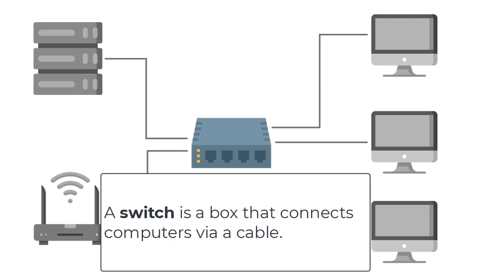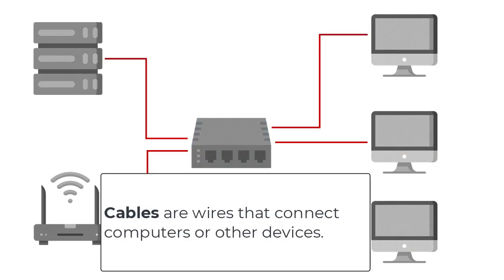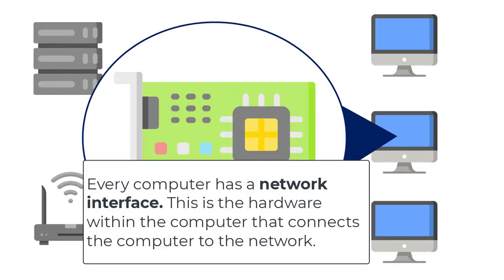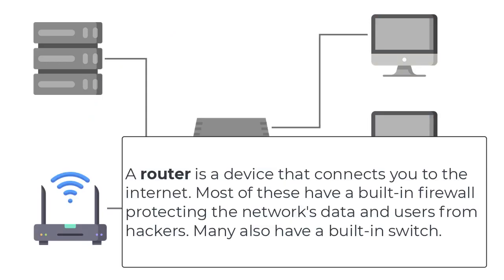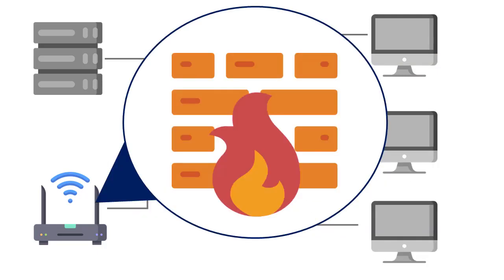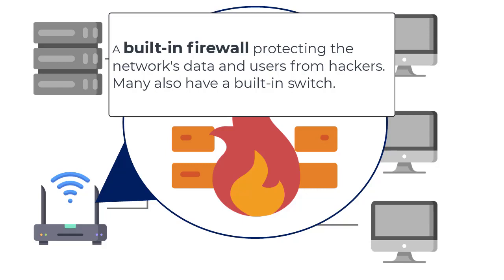A switch is a box that connects computers via a cable. Cables are wires that connect computers or other devices. Every computer has a network interface — the hardware within the computer that connects it to the network. Lastly, there's the router, a device that connects you to the internet. Most routers have a built-in firewall protecting the network's data and users from hackers, and many also have a built-in switch.